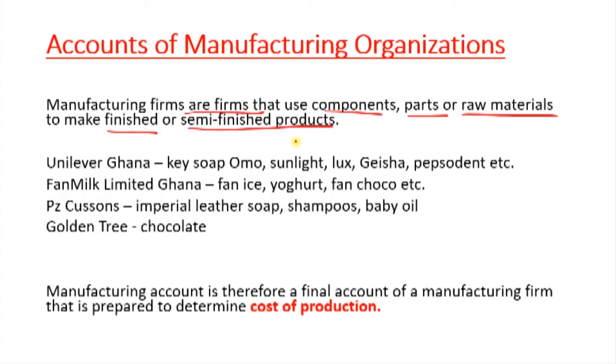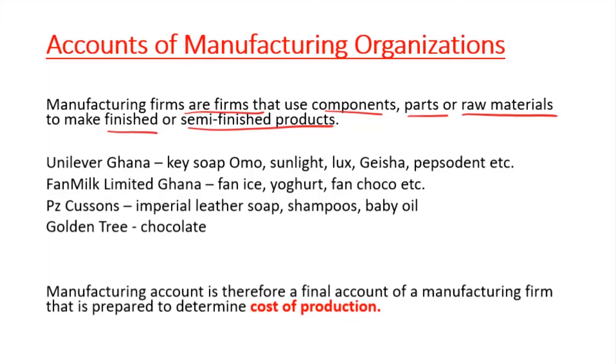In Ghana we have so many manufacturing firms. If you go to the industrial area specifically, you will see a lot of these firms who transform raw materials into finished products. An example is Unilever Ghana — I'm sure you've heard of this company. They produce a lot of products; Key soap is a typical example of one of their products.